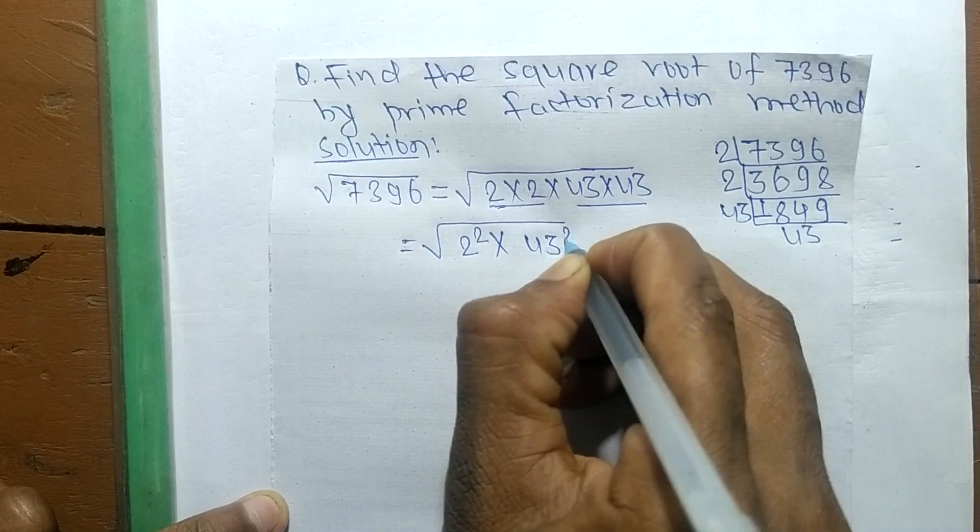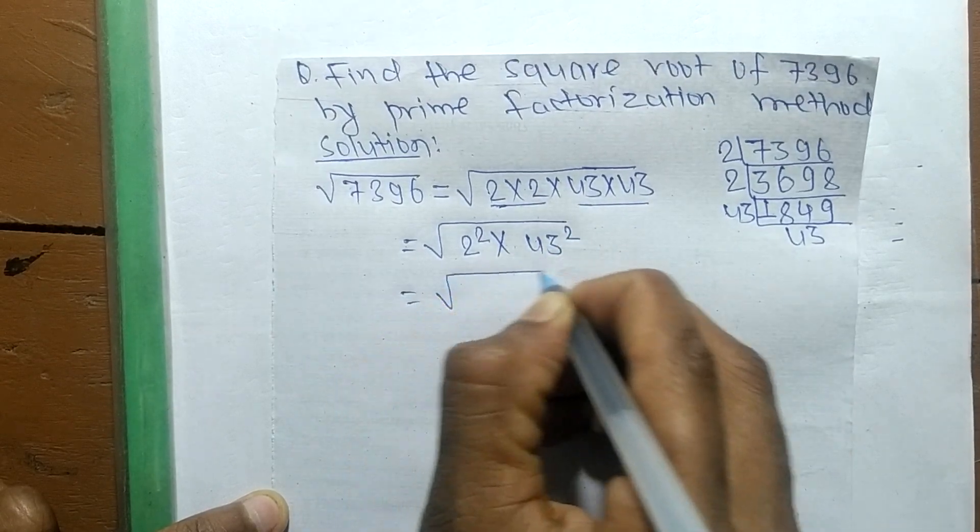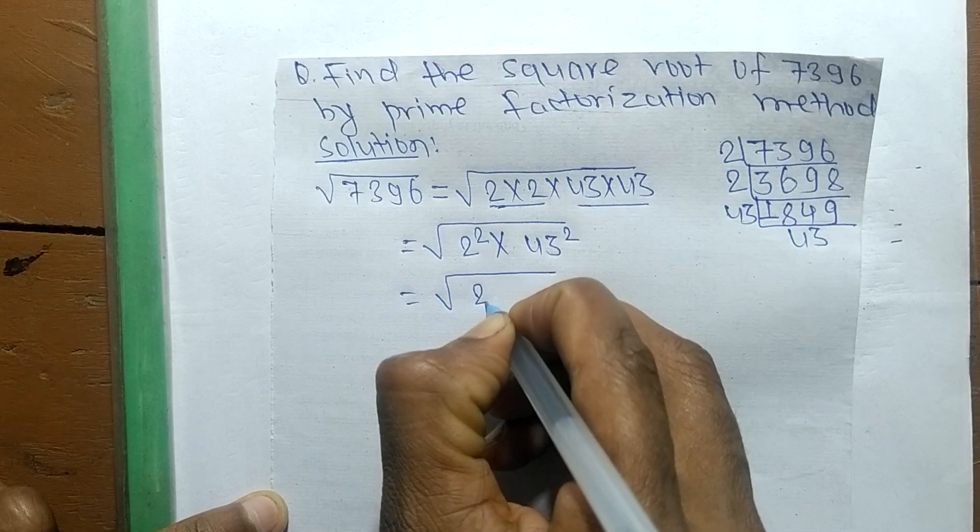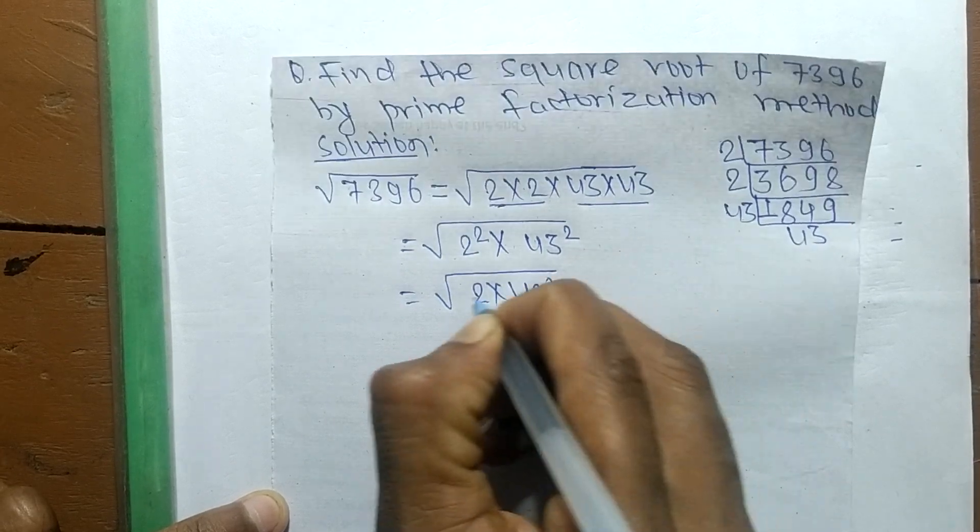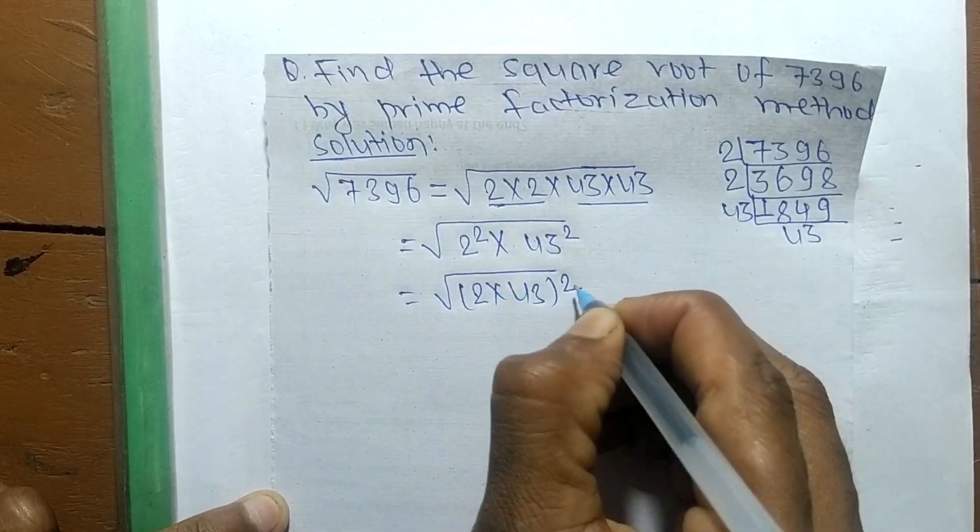Square is present in both, so we make it 2 into 43 whole squared.